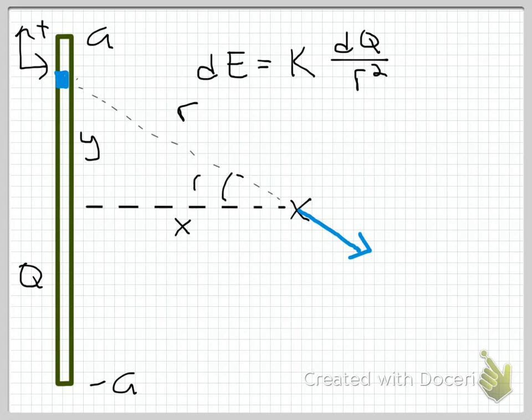x is my distance from my origin to my point of observation, and y is my distance from my origin to my source point. And of course, as you can see, this defines an angle, which I'll call theta. Just from Cartesian transformations, you know that r² is going to equal x² + y².